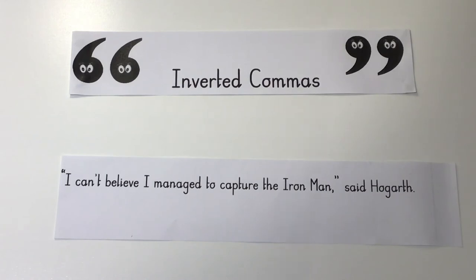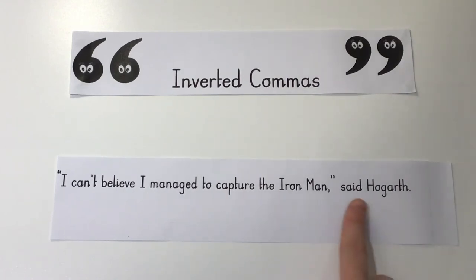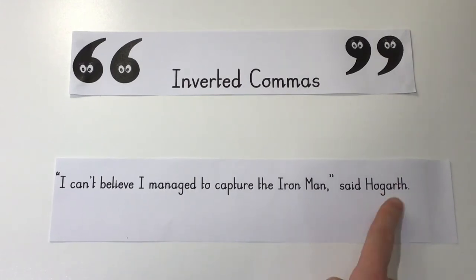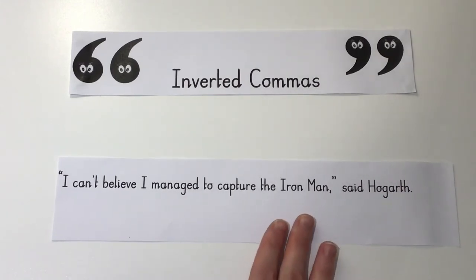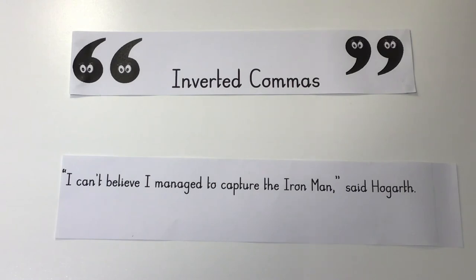Finally, when using direct speech we need to include information about who is speaking and also how they are speaking — this is called a reporting clause. So in our original sentence, "I can't believe I managed to capture the iron man," said Hogarth, the reporting clause tells me who said it. However, there are many alternatives to the verb 'said' to express how a character is feeling, and this impacts on how the reader interprets the direct speech.